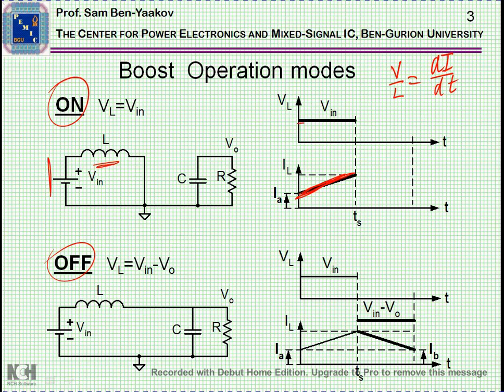Here is the voltage imposed on the inductor, and this is the current going up. At this point, the switch is turned off — that is, it is disconnected. There is an open circuit here. So what will happen? Well, there is a current flowing through the inductor.